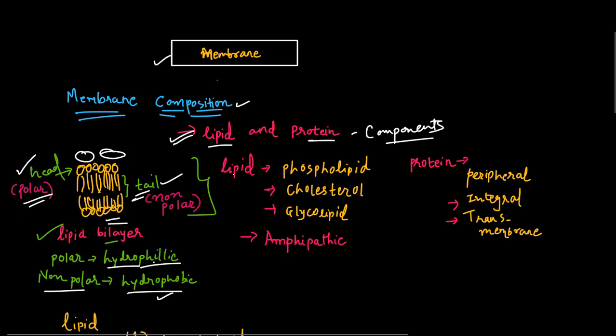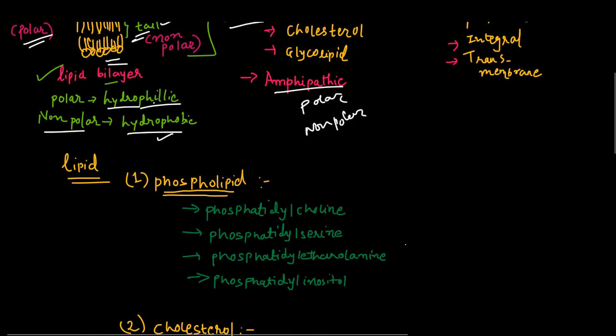First, we are going to see what are the lipid types that constitute the membrane, as well as which are the protein types that are found on the membrane. This membrane is amphipathic in nature, meaning it consists of a hydrophilic part as well as a hydrophobic part.